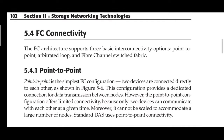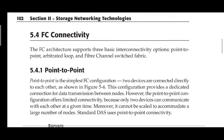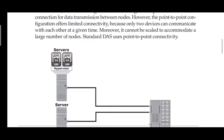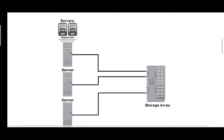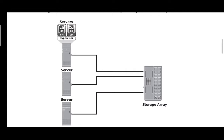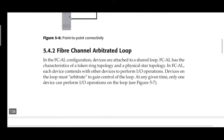FC architecture supports three basic interconnectivity options: point-to-point connection, Arbitrated Loop (FC-AL), and Fiber Channel Switched Fabric (FC-SW). Point-to-point is the simplest approach — there is no interconnecting device. Servers or hosts are on one side and storage arrays on the other, connected only by a cable with no device in between. It is used for shorter distances — direct communication between host and storage array.